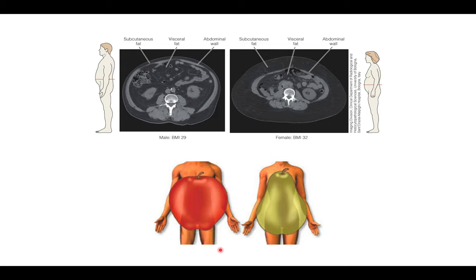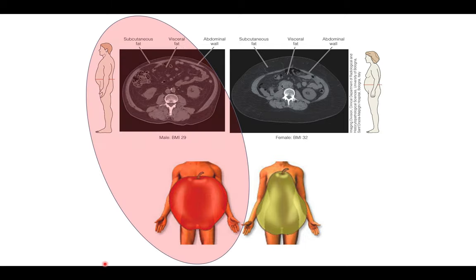Looking at fat distribution patterns: the apple type has a large abdominal belly associated with increased disease risk. The pear shape has a lower amount of abdominal adipose tissue with higher deposition in the hip area, and is associated with a lower risk of disease. It's important to know the difference in risk between apple and pear types, as well as the difference in risk between visceral and subcutaneous fat, with visceral fat being the one associated with increased disease risk.